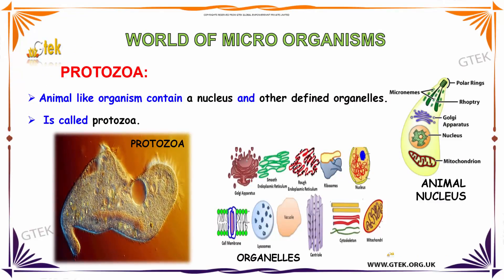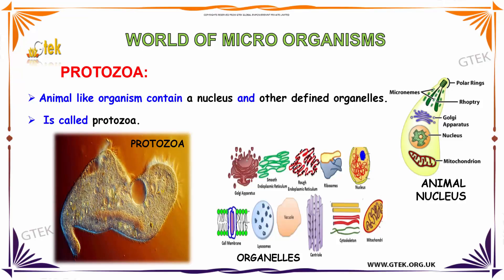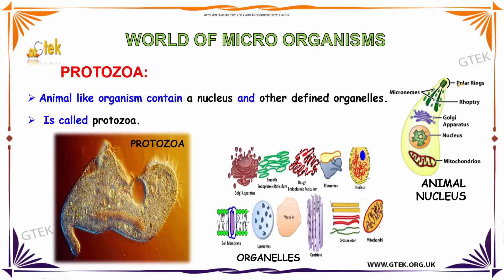We can see about protozoa. Protozoa is an animal-like organism which contains a nucleus and other defined organelles. You can see it over here. It contains mitochondria, a nucleus, Golgi apparatus, contractile vacuole, polar rings, and micronemes.